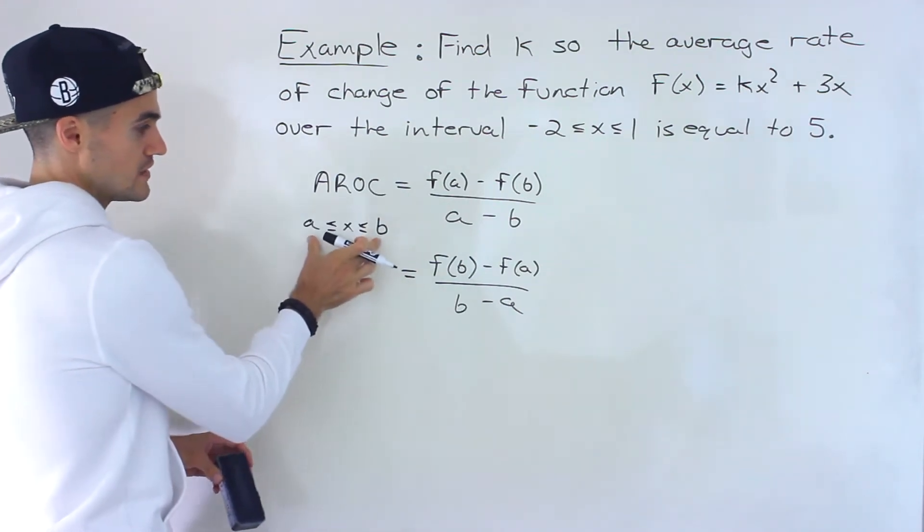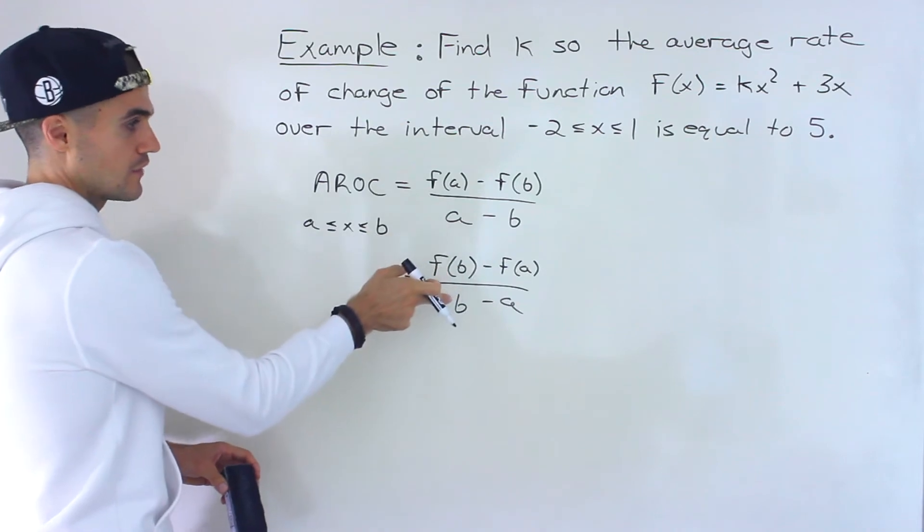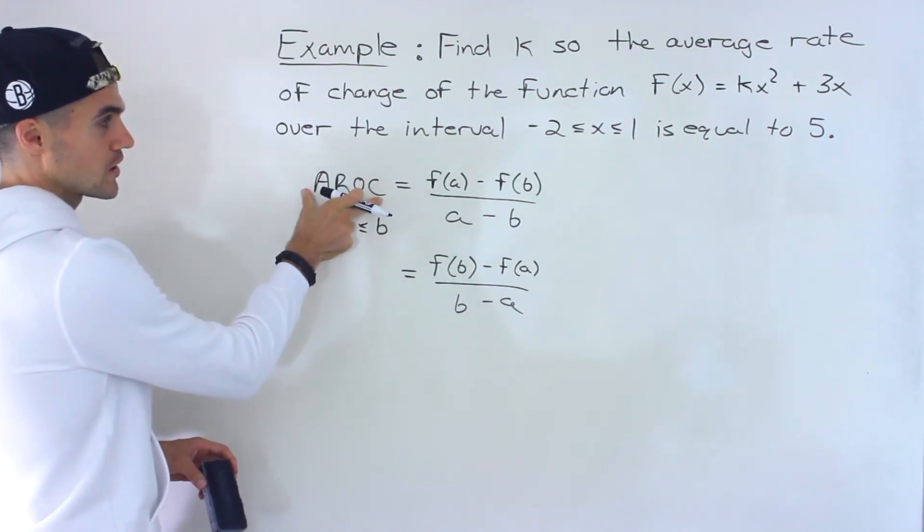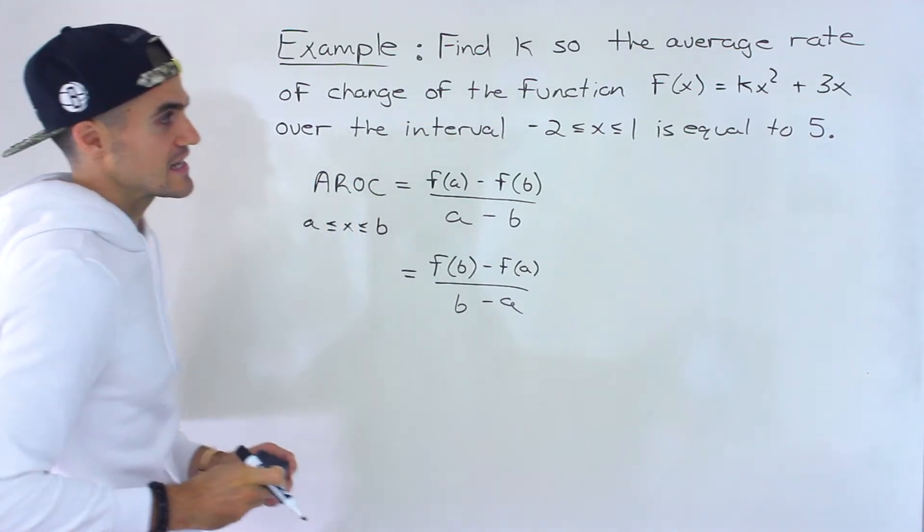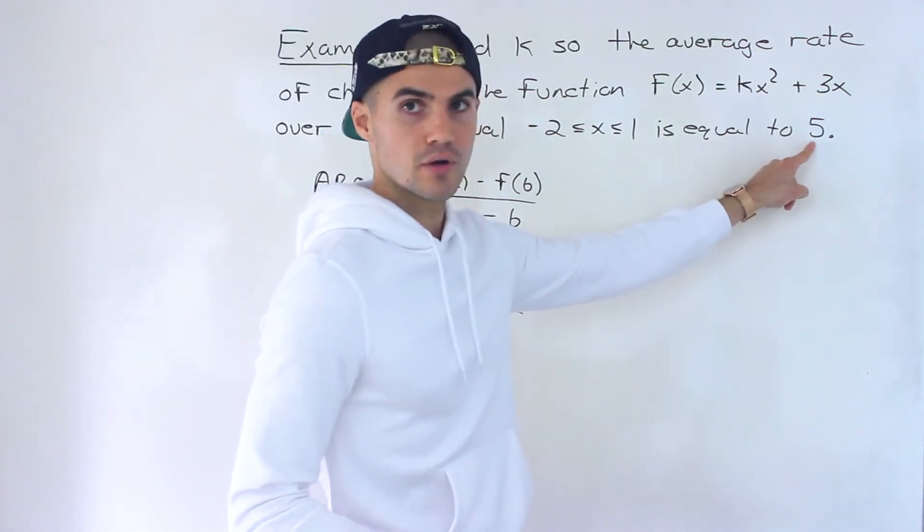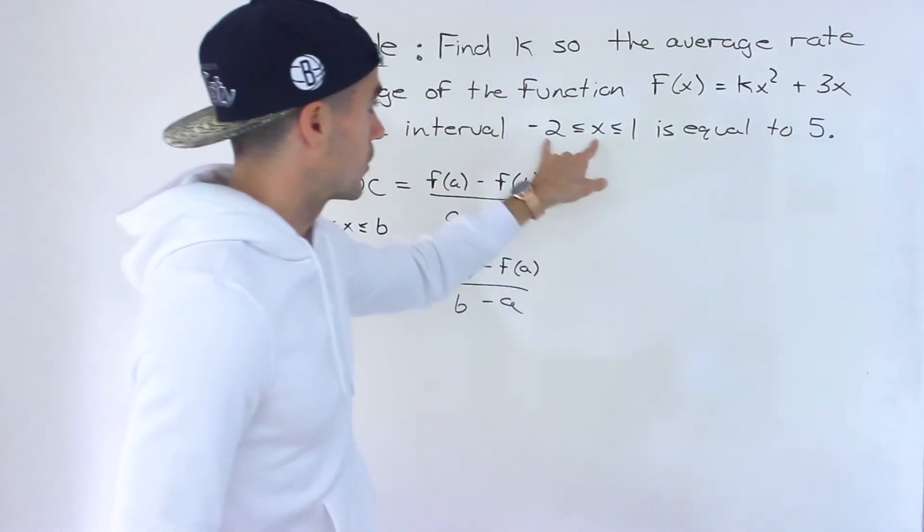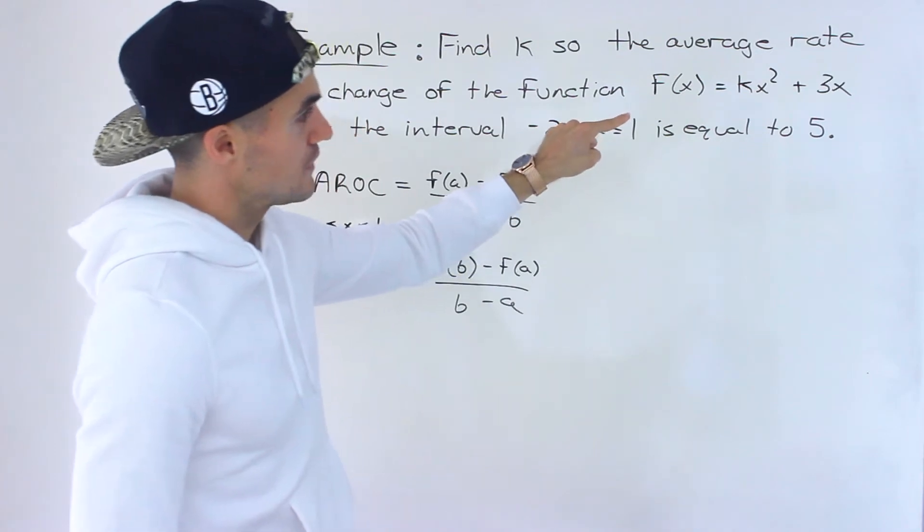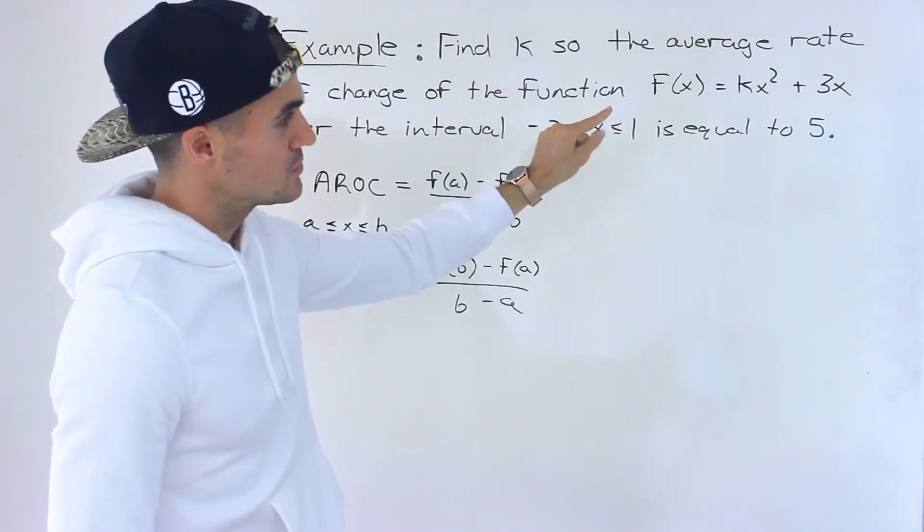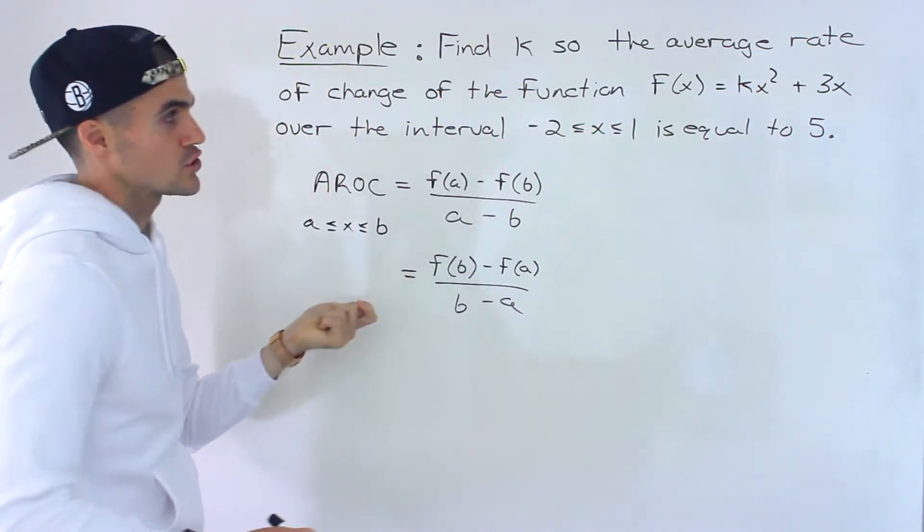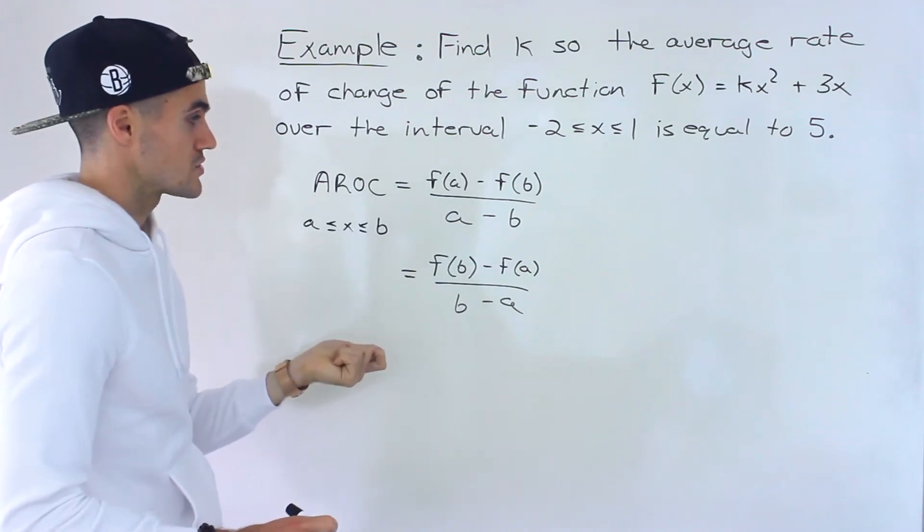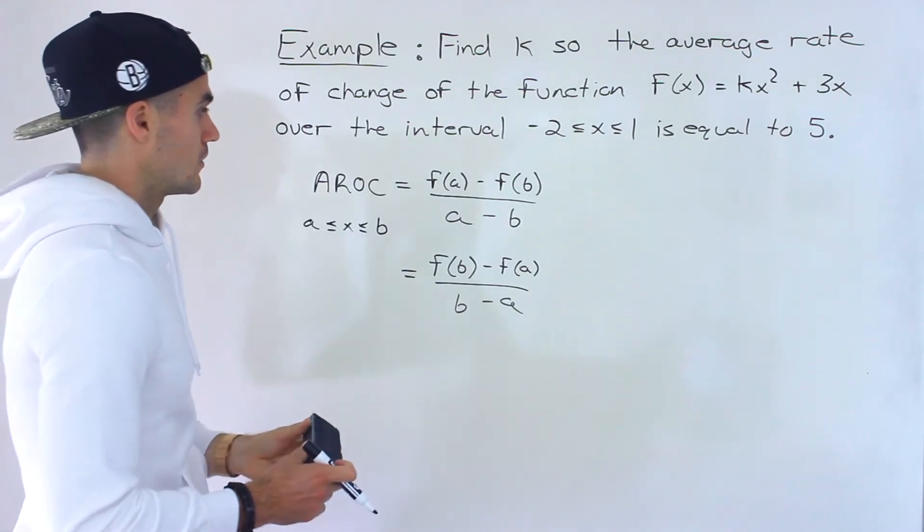Usually we're given these values and the function, and we have to find the average rate of change. Notice in this case, we're given the average rate of change—it's 5—and we're given the values, but there's a constant in the function k that we're going to have to solve for.